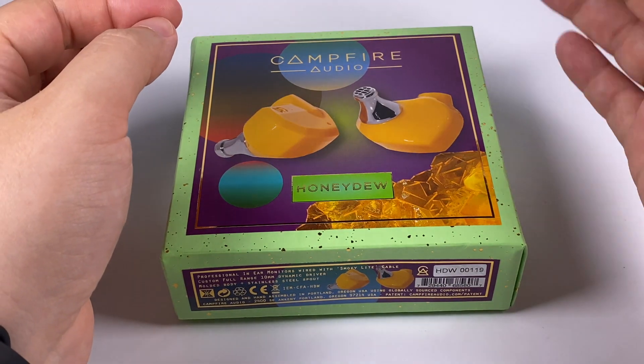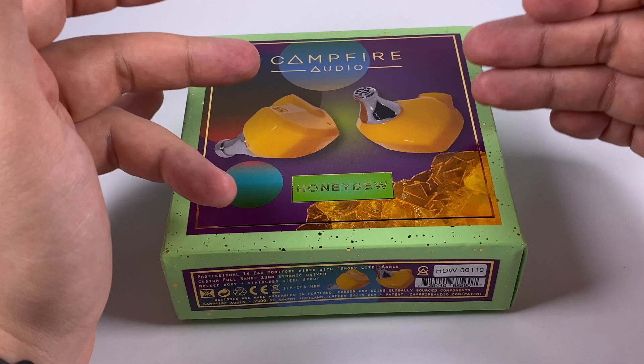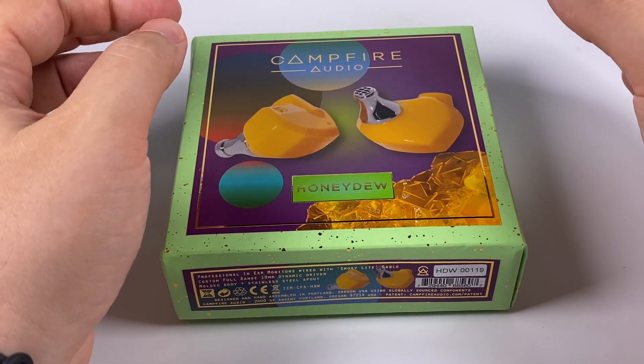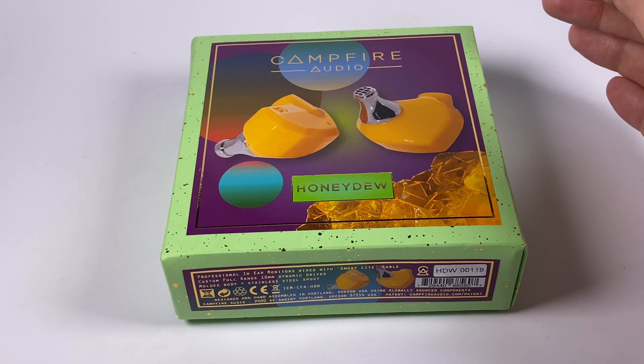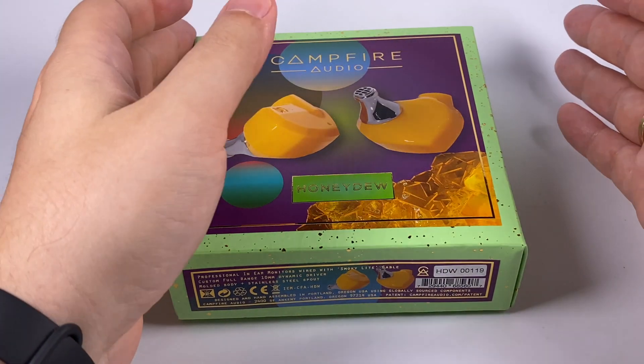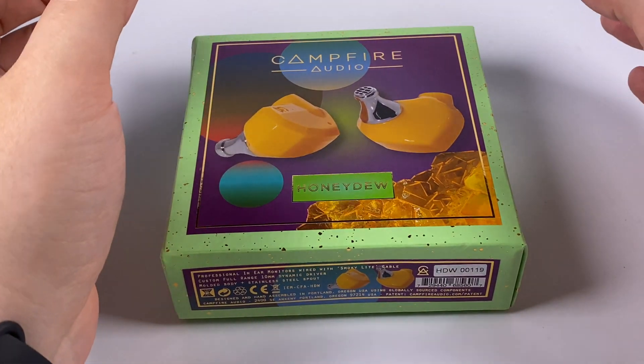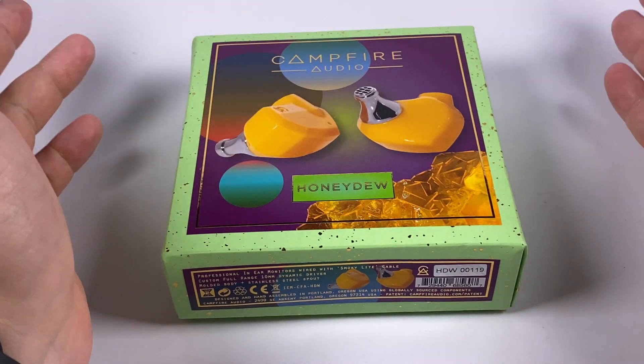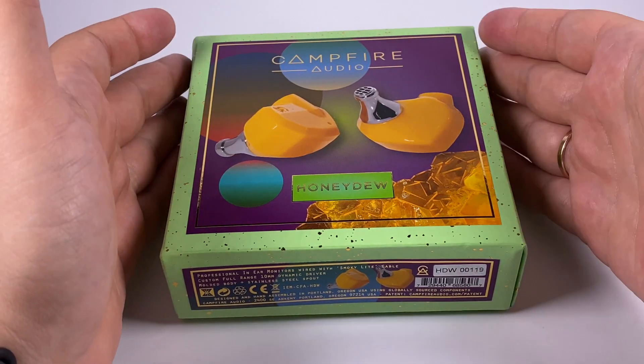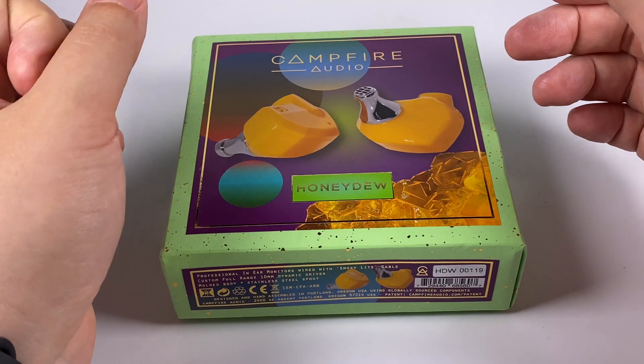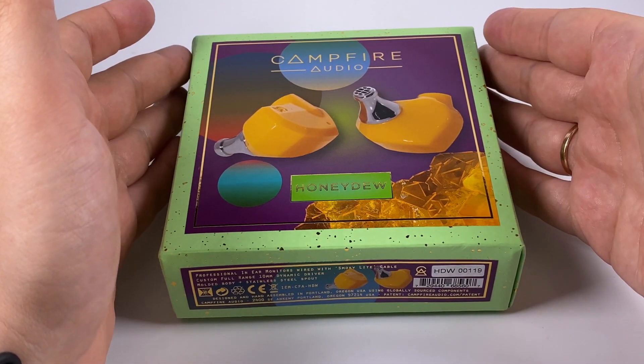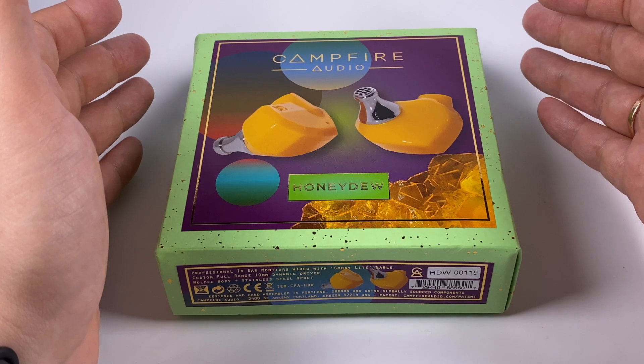Satsume was a single balanced armature and Honeydew is single dynamic driver. Besides this difference in drivers and of course in sound, they are the same. Similar shells, accessory set, package and so on. But price is a bit higher here, it costs $250, probably dynamic drivers cost a bit more.